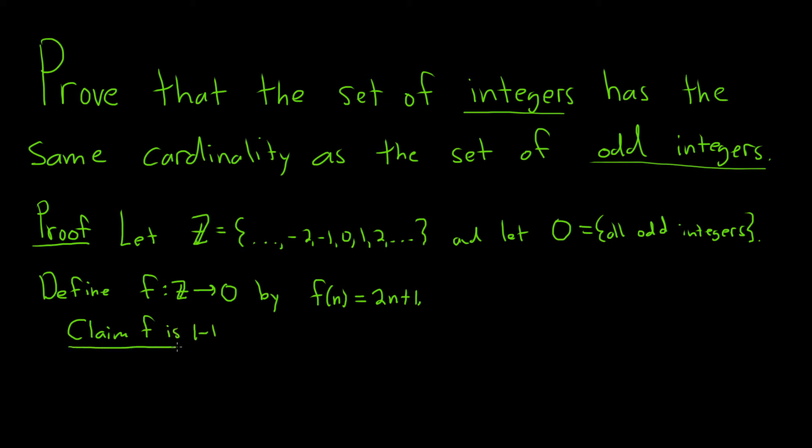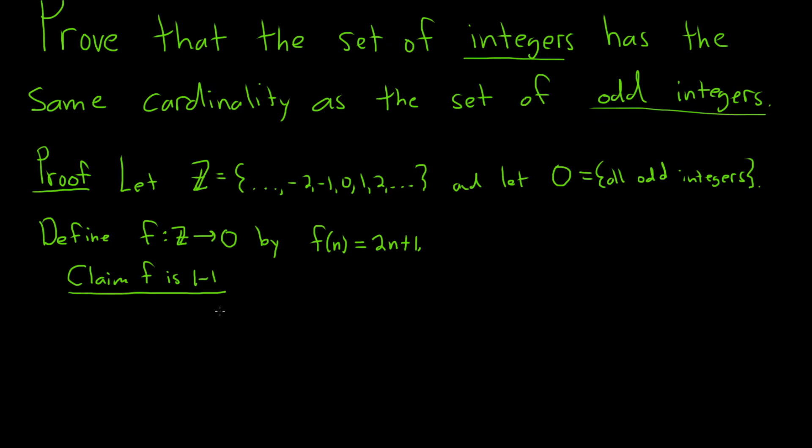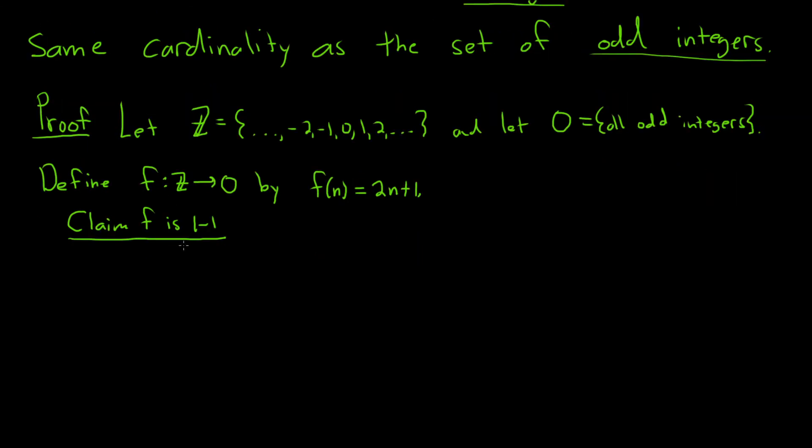1 to 1 is also known as injective. Recall the definition means that f is going to be 1 to 1 if whenever f of a is equal to f of b, then we have a equals b. So if this is true for all a, b in the domain, then f is 1 to 1. So we'll start the proof by saying,